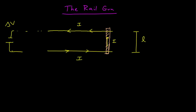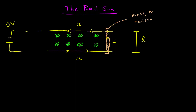We also impose on this whole system a constant magnetic field. We'll say the magnetic field is into the page. The bar here has some mass, we'll say M, and it contains some resistance R, and we're going to say the rails have negligible resistance compared to the resistance of the bar.